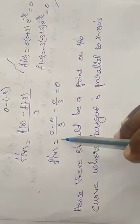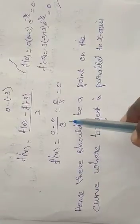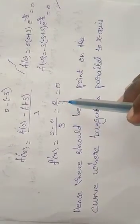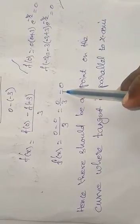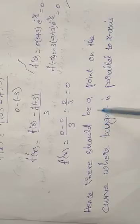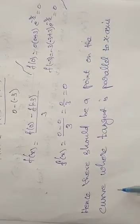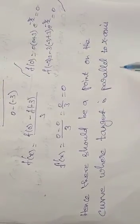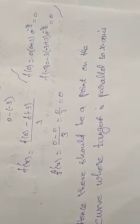So f'(x) = (0-0)/3 = 0/3. The final answer is 0. Hence there should be a point on the curve where the tangent is parallel to x-axis.